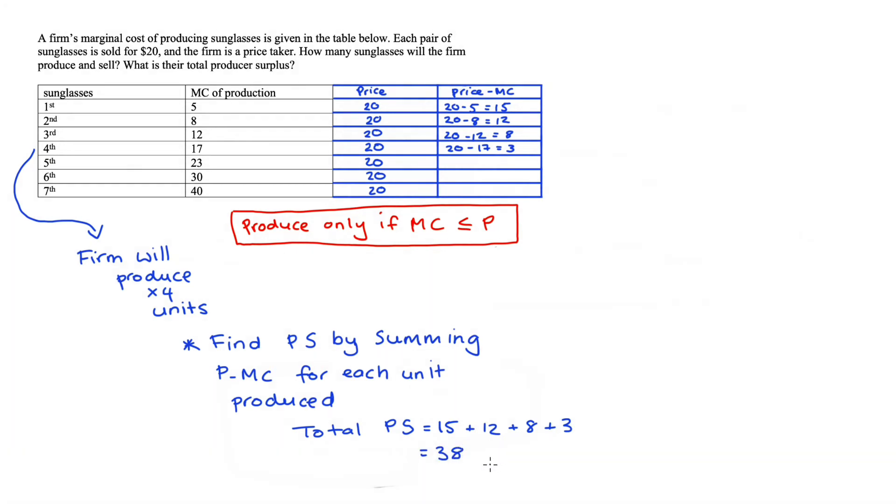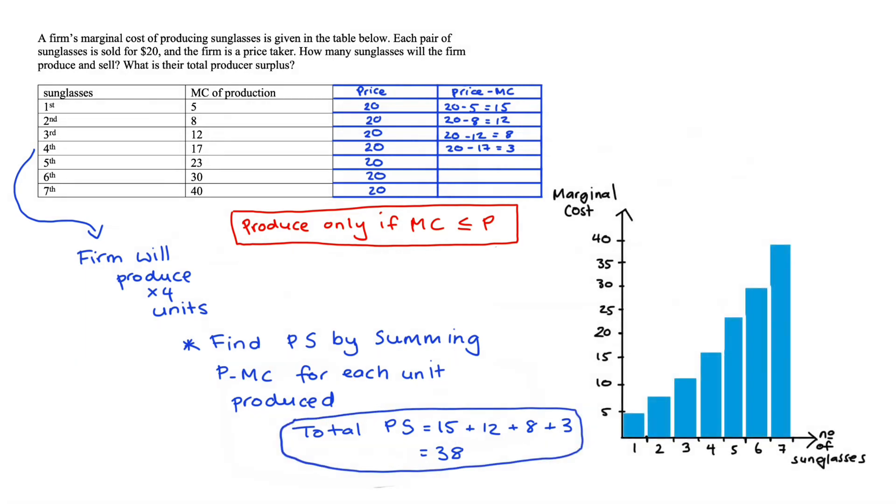For these sorts of questions, we can visually represent what has happened like this. We have two axes, marginal cost on the vertical axes and the number of units of sunglasses on the horizontal. The blue bars here represent the marginal cost of production for each unit. So that first height is 5, for instance. The second height would be 8.